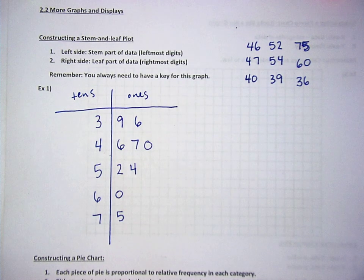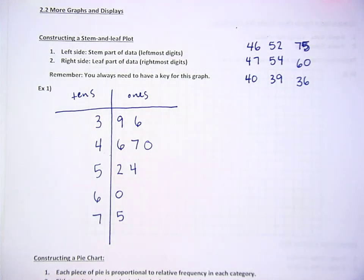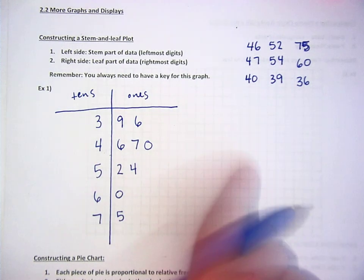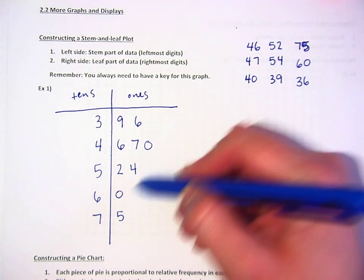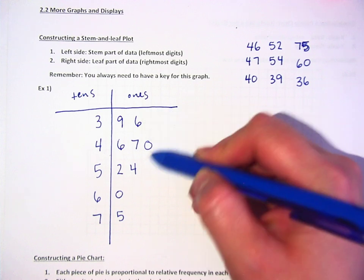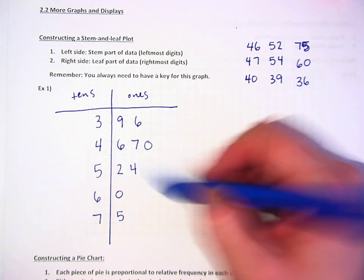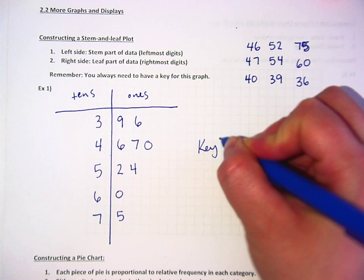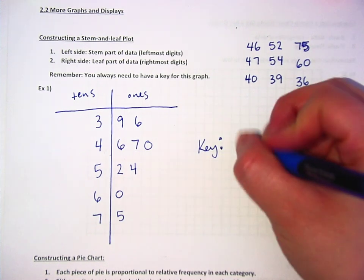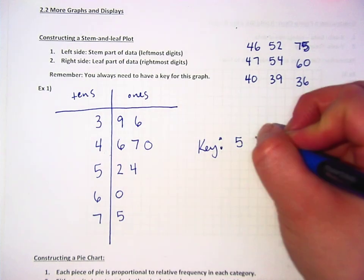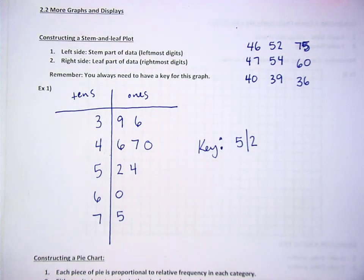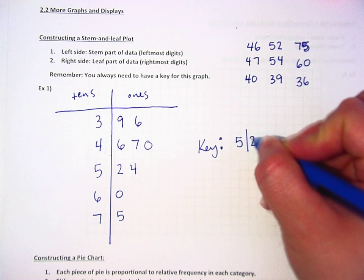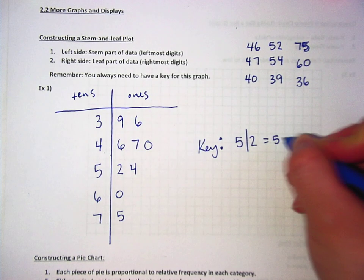Now, if I had the same number twice, I would write that number again and again and again until it, so like if it was 46, I'd keep putting sixes over here to represent everybody. Okay. This side is the side you're looking at visually to see where most of the data is. It looks like most of our data is in the forties. And the final thing is you always have to have a key.